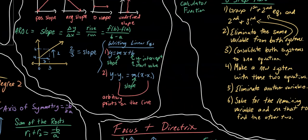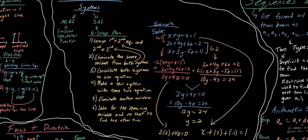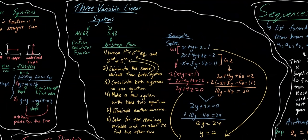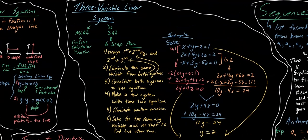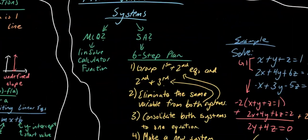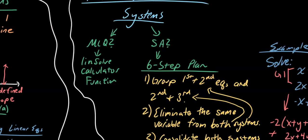This should all be reviewed from Algebra 1, but what's new in Algebra 2 is three-variable linear systems. If these show up in a multiple-choice question, you should be using the Linsol function on your calculator — we have another video on that. Be sure to check it out as a calculator guide to Algebra 1 and Algebra 2 Regents examinations.